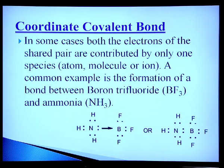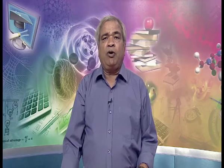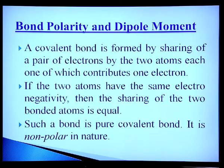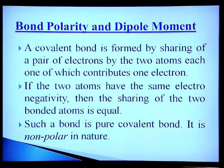Bond polarity is most important. A covalent bond is formed by sharing of a pair of electrons by two atoms, each contributing one electron. If the two atoms have the same electronegativity, then the sharing between the two bonded atoms is equal, as in the case of hydrogen. Such a bond is a pure covalent bond and is non-polar in nature — the H₂ molecule forms a non-polar bond.